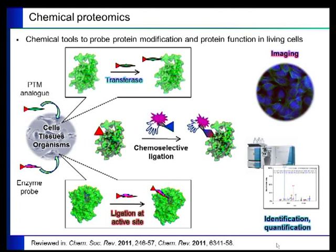We see two sides to this type of technology. One side is used to explore protein post-translational modification, or PTM, where we take chemical analogues of those modifications and feed them to cells. We can use it also on tissues or even in whole organisms, and those analogues are transferred to their target proteins by the same transferases that would transfer the native modification.